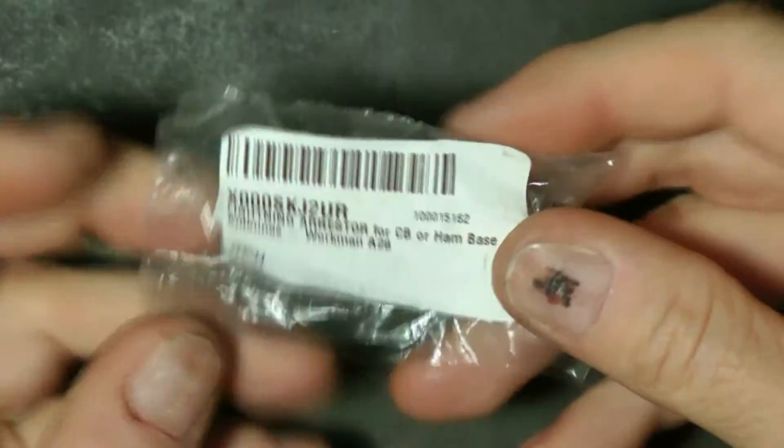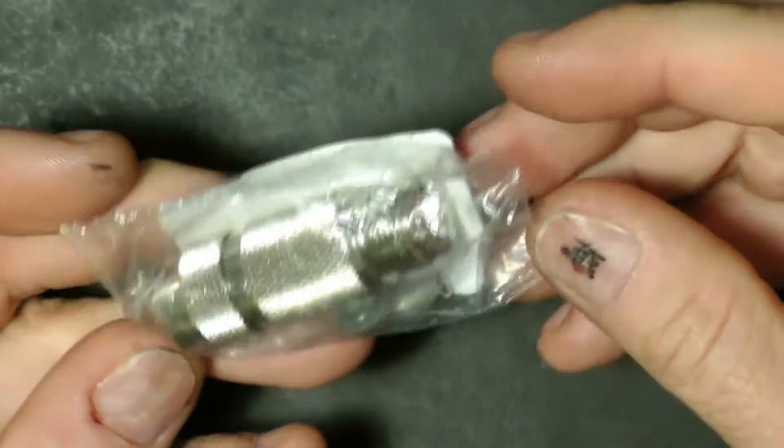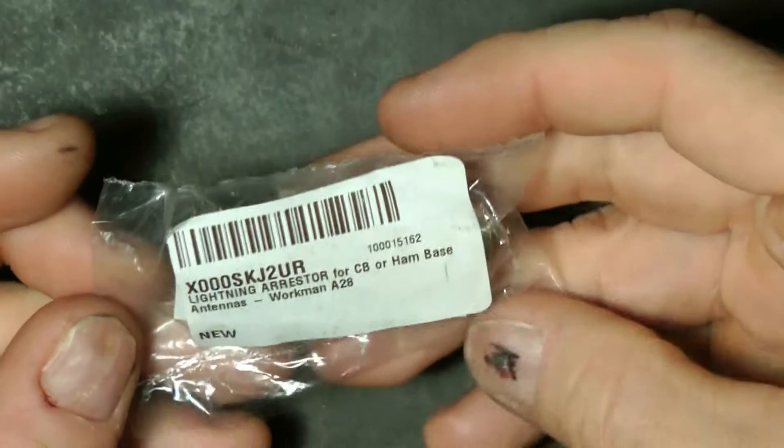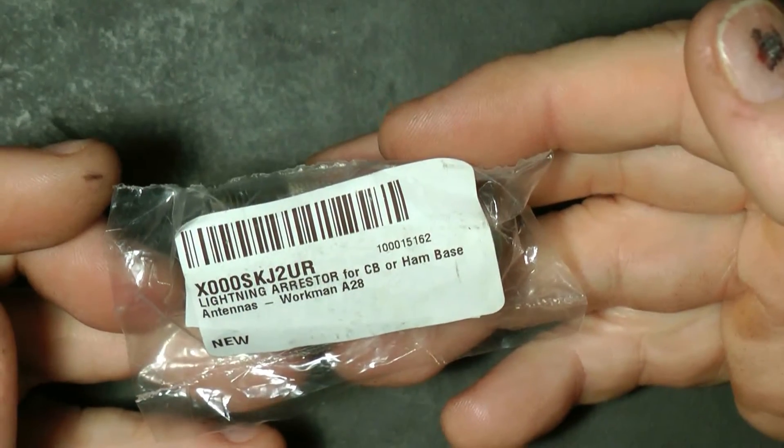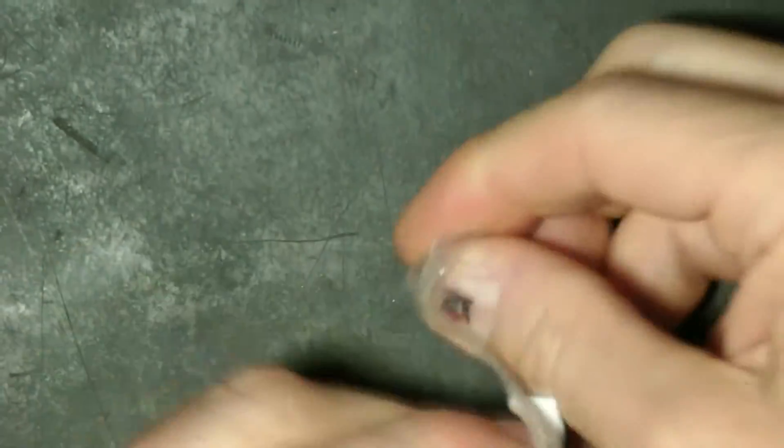Hey guys, I wanted to bring up a video here for anybody that has CB or ham radio. It's pretty important to get a lightning arrester. This is actually a lightning arrester that I picked up off of Amazon to show you. This is kind of how it looks.